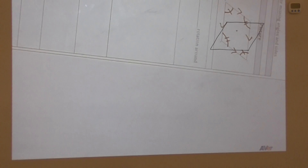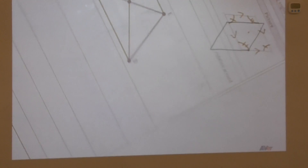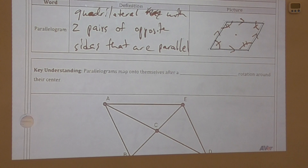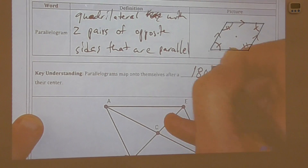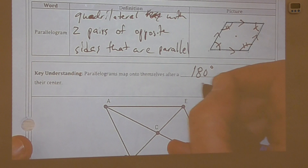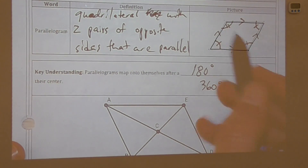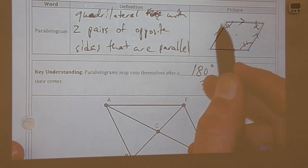At 270 degrees it is not mapped onto itself, and then all figures when turned 360 degrees are again mapped onto themselves. So parallelograms map onto themselves after a 180-degree rotation around their center, and also after a 360-degree rotation. That's the reason opposite angles are congruent — when we turn the parallelogram, this angle comes down here.